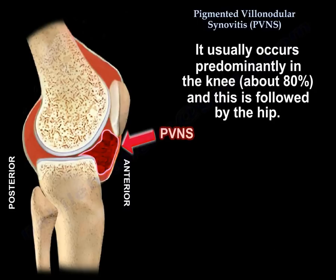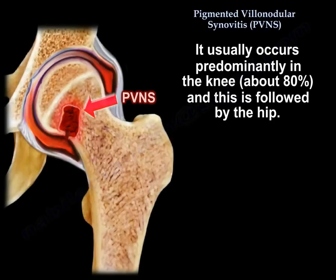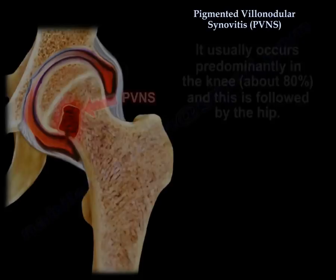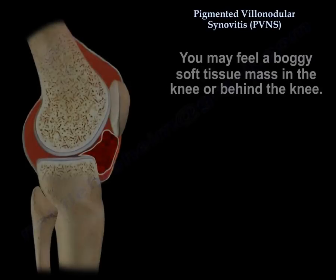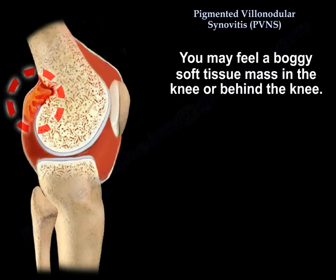PVNS occurs predominantly in the knee, about 80% of cases, followed by the hip. You may feel a boggy, soft tissue mass in the knee or behind the knee.